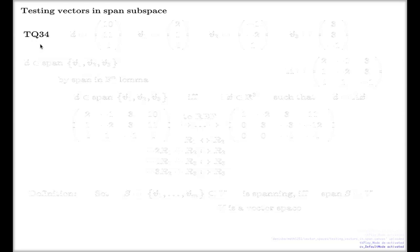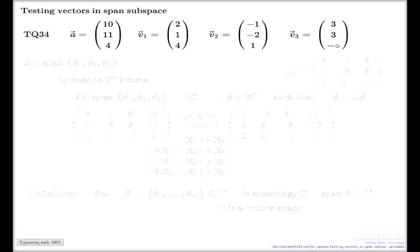In question 34, you're given four vectors. We have vector a with components (10, 11, 4), vector v1 with components (2, 1, 4), vector v2 with components (-1, -2, 1), and vector v3 with components (3, 3, -1).